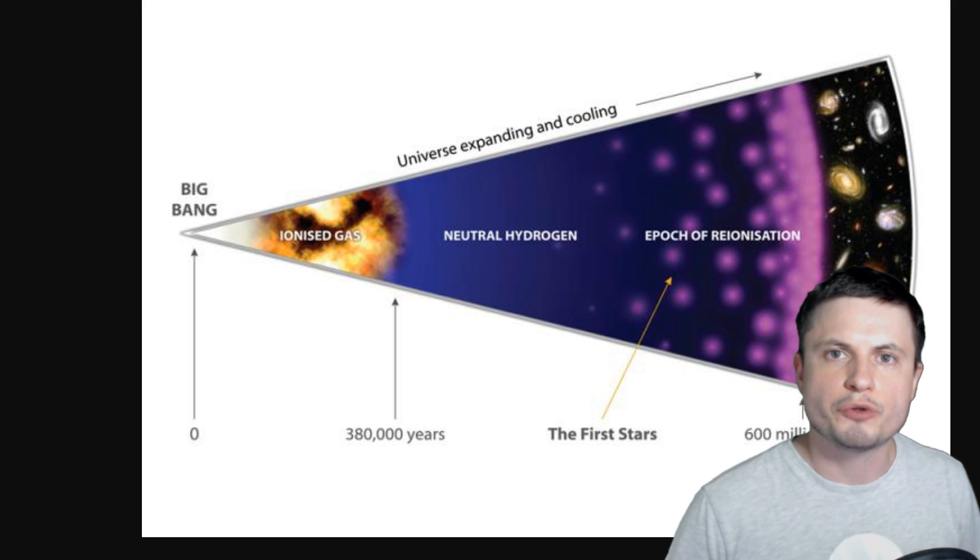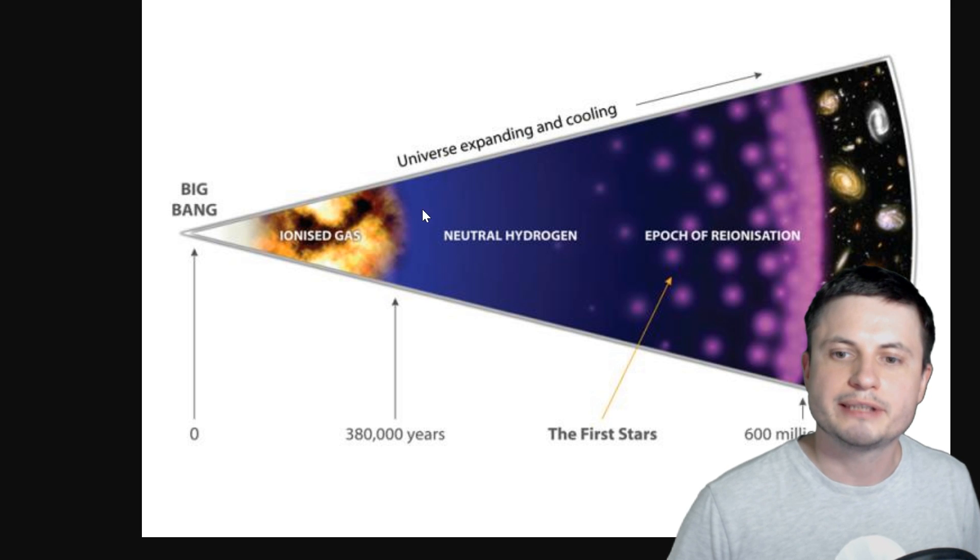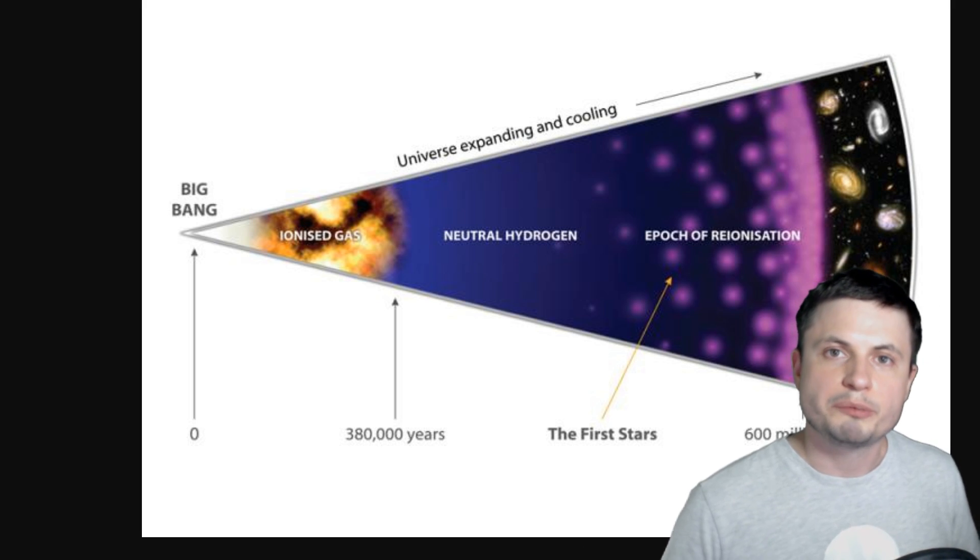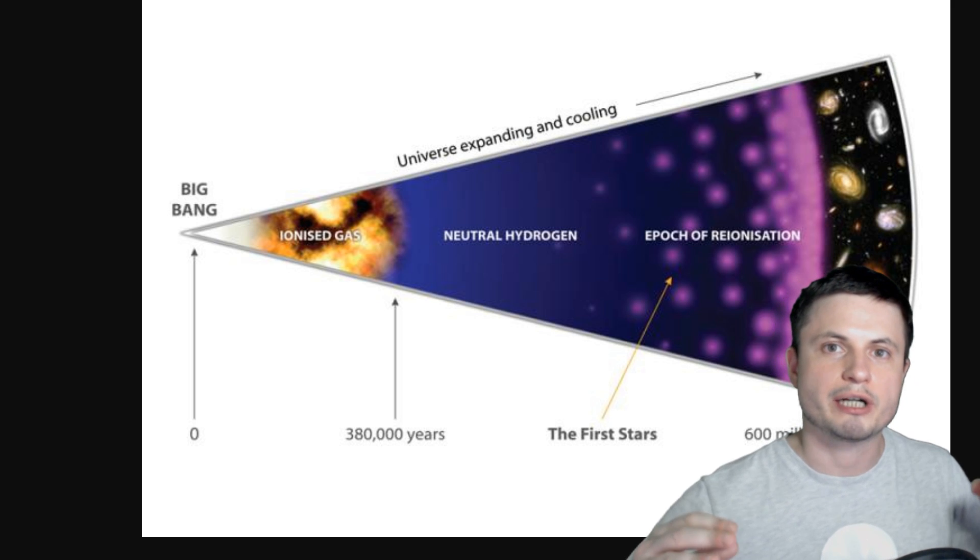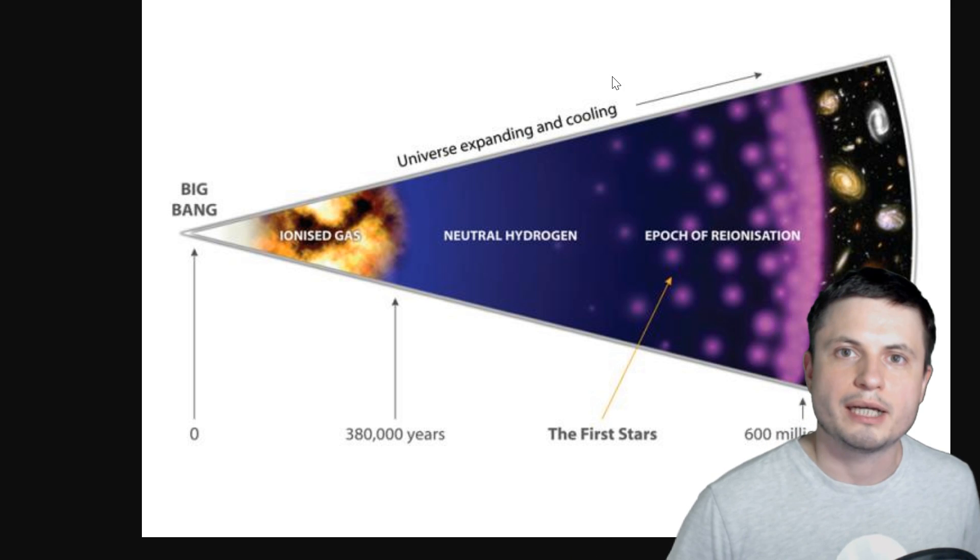And this illustration from University of Cambridge explains this pretty well. So right here, around 380,000 years ago, suddenly all of the hydrogen became neutral, creating this very thick gas-like formation across everywhere in space. And the light didn't really travel that well through it, mostly because the entire universe was basically covered in this very thick fog. And all of this lasted for at least a few hundred million years until the appearance of first stars.